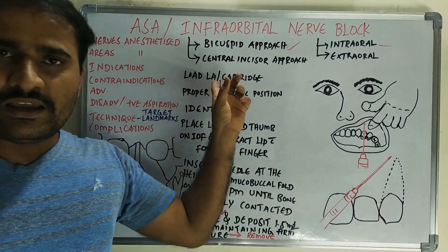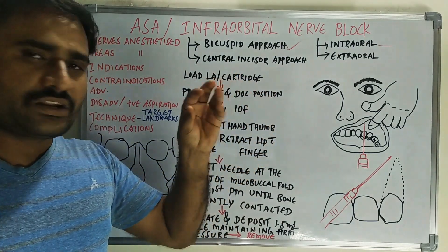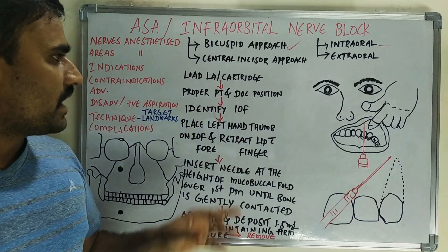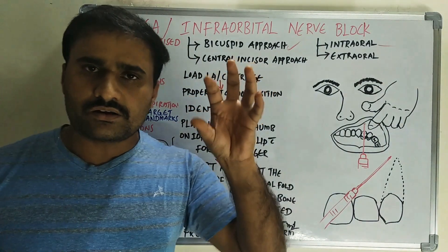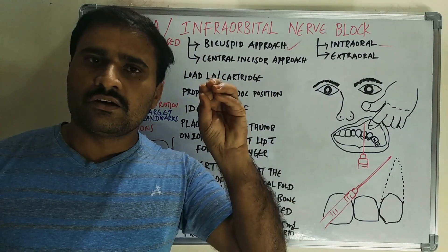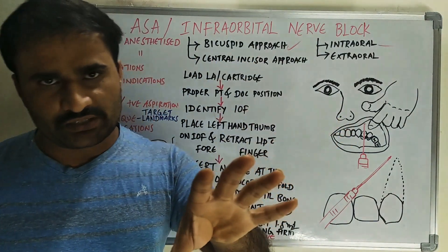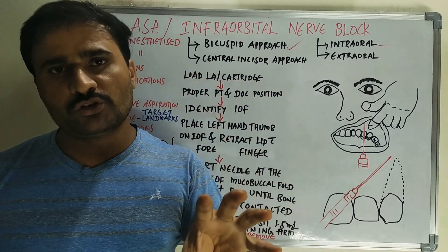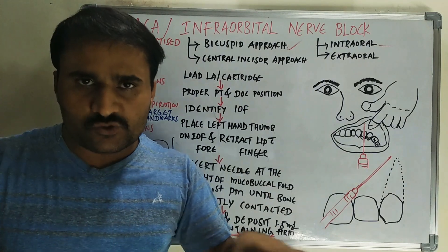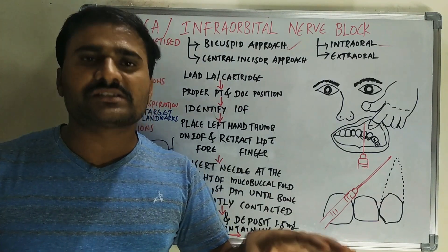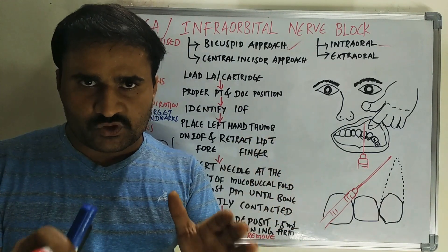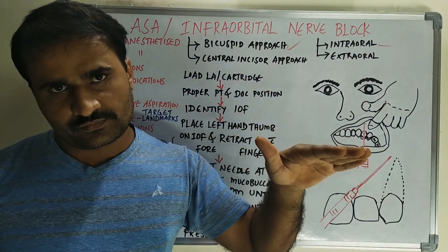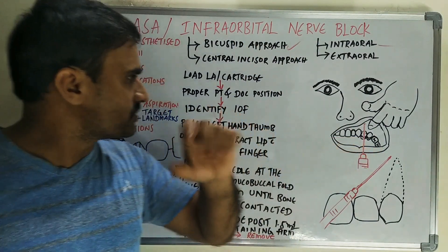For the bicuspid intraoral approach: first, load the LA — 1.5 ml is enough, or use a cartridge. Then position properly: for both right and left infraorbital nerve blocks, you should be at the 10 o'clock position. The patient should be in a supine position with the neck slightly extended so that the maxillary occlusal plane is at 45 degrees to the floor.